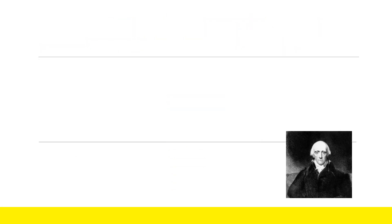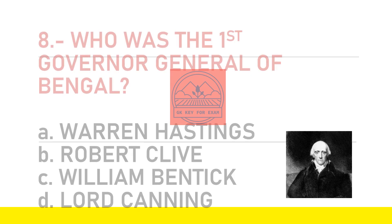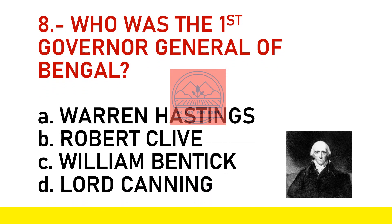The next question is: who was the first Governor General of Bengal? The options are A) Warren Hastings, B) Robert Clive, C) William Bentinck, or D) Lord Canning. The answer is A) Warren Hastings.